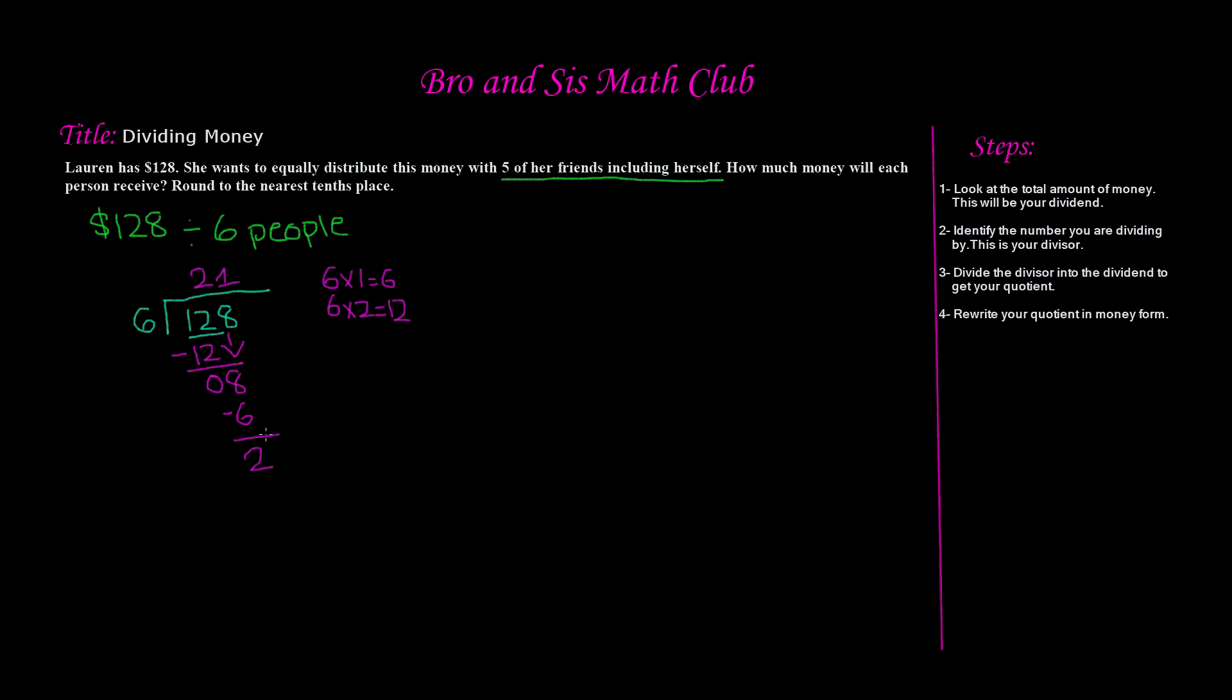So now we have a remainder. We cannot put this into a remainder form. Usually if we were doing regular long division, we would have just said 21 remainder two. But this is division of money. So we're going to go ahead and put a decimal point up here in our quotient and put a zero over here in our remainder of two to make this into a 20. Now how many times does six go into 20? Let's continue our times table to find out. We know that six times three is 18. Six times four is 24. Now 24 is greater than 20. So we're going to have to do six times three, which is 18.